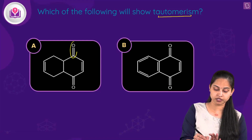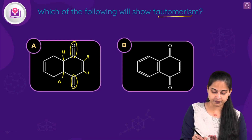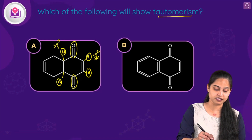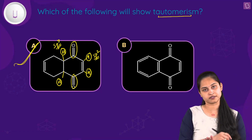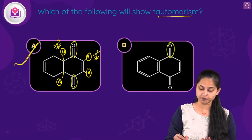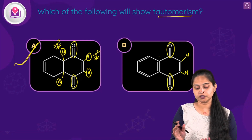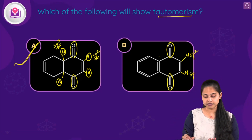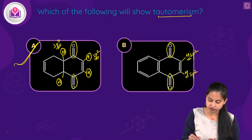Option A has two carbonyl groups. It has alpha-hydrogen atoms that are sp2 hybridized as well as alpha-hydrogen atoms that are sp3 hybridized attached to sp3 hybridized alpha-carbon atoms, so option A will show tautomerism. Option B has a carbonyl group, but the alpha-hydrogen atoms are sp2 hybridized, not sp3, so they will not participate in keto-enol tautomerism.